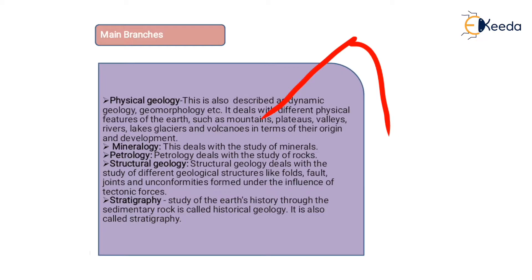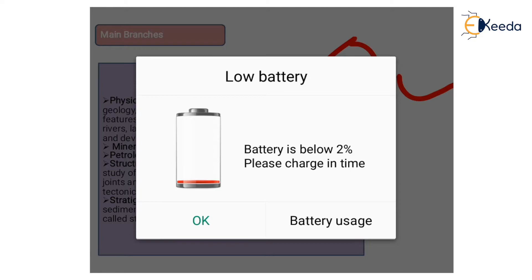In physical geology, we study the origin and formation of mountains, river basins, and many such features — how they originated, where they came from, how mountains form, the shape and orientation of mountains — everything is studied in physical geology.